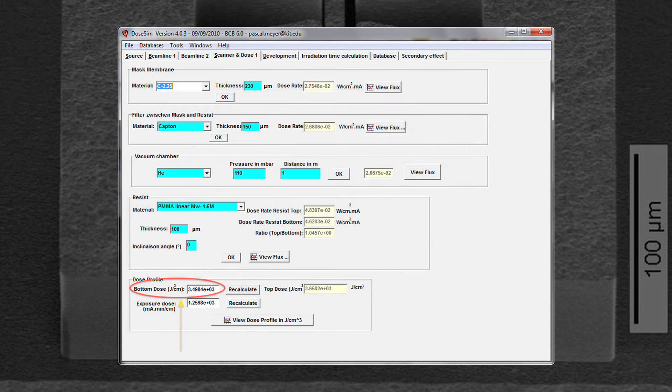The dose is calculated to have a minimum 3.5 kilojoule per centimeter cubed bottom dose while the ratio of top to bottom dose is maintained to be less than 2. A higher ratio will cause undesired heat effects including foaming of the resist surface.